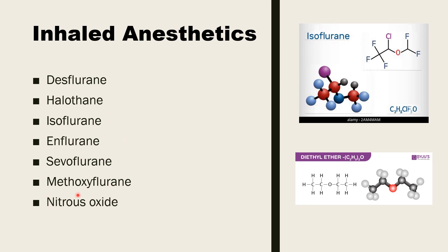Nitrous oxide is a special inhaled general anesthetic, and most inhaled general anesthetics derive from diethyl ether. Many years ago, people discovered that diethyl ether could put patients to sleep. Scientists then began modifying the molecule into modern anesthetics like isoflurane, which have the ether structure with other atoms added.